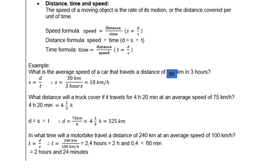Another way of dealing with rate is distance, time, and speed. The speed of a moving object is the rate of its motion, or the distance covered per unit of time. The formula for speed is distance over time. The formula for distance is speed multiplied by time. And the formula for time is distance over speed.